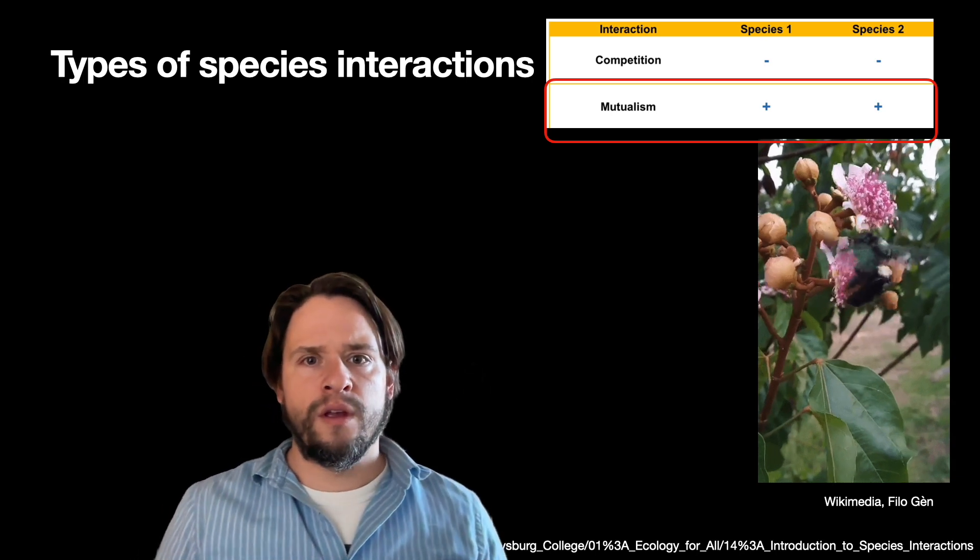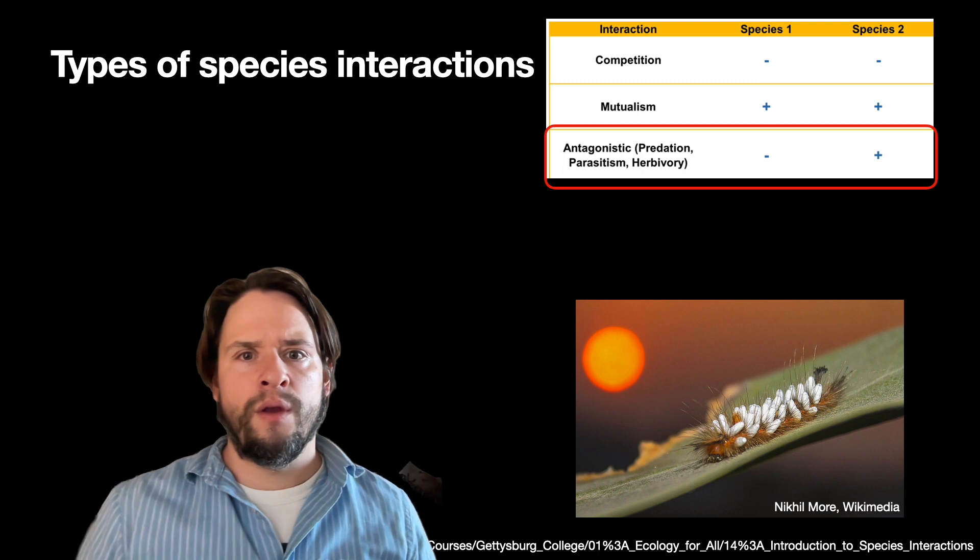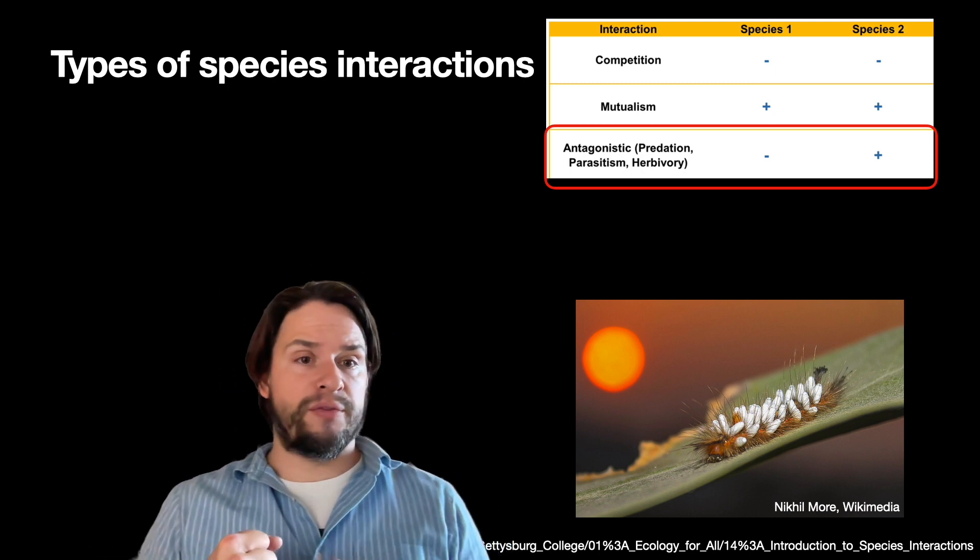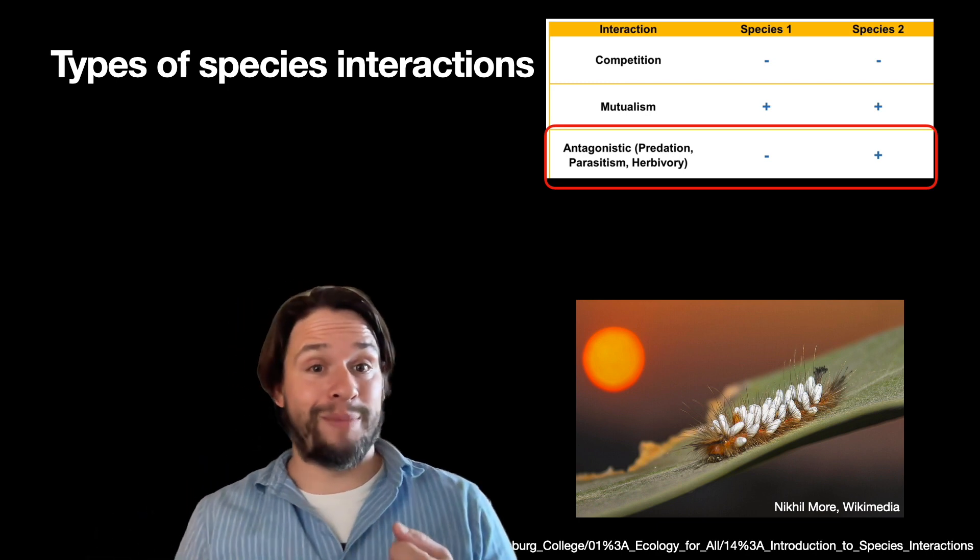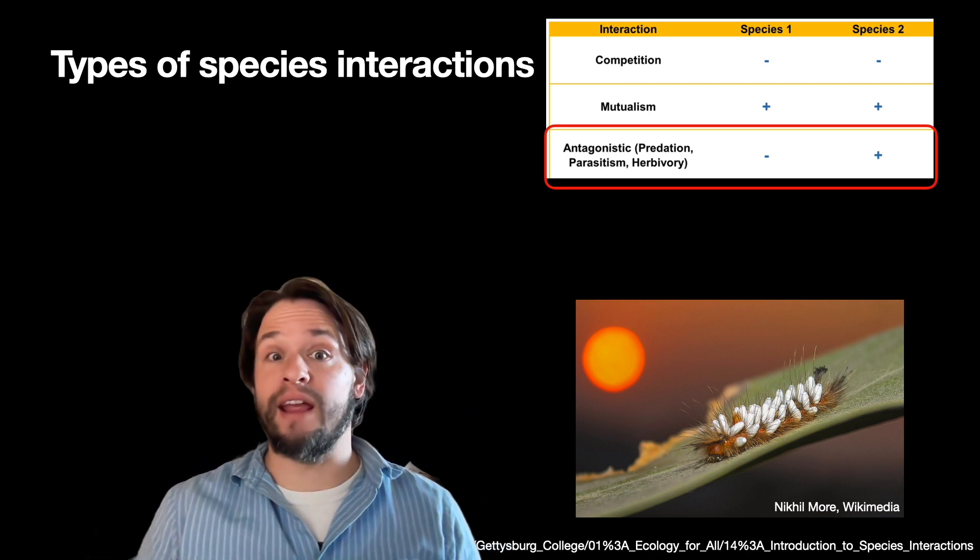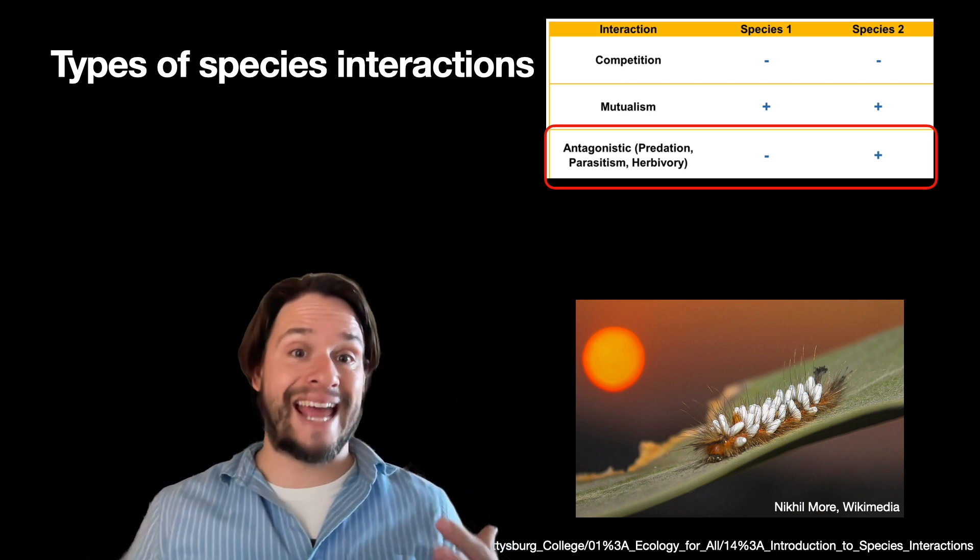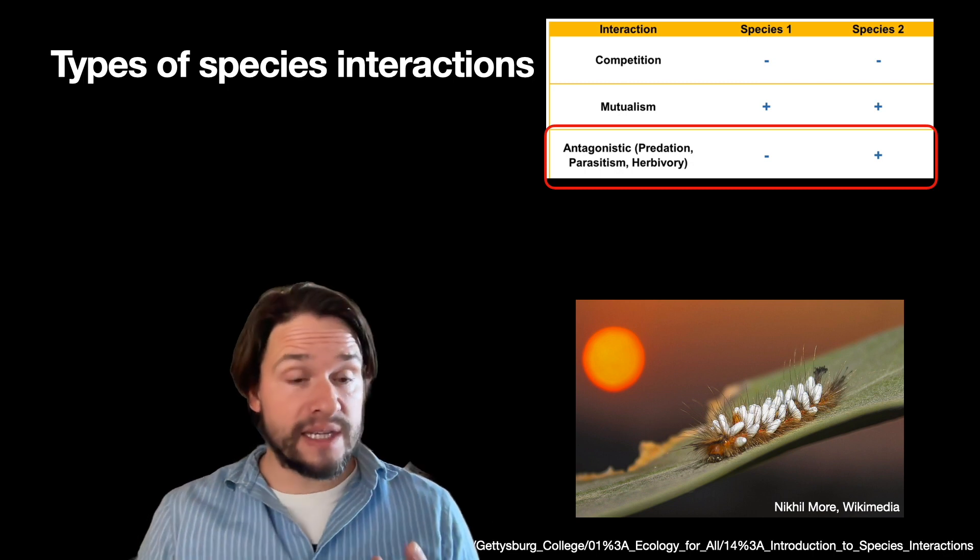But we can also think of interactions where one partner benefits but the other does not. And these generally we can consider them antagonistic interactions, and we've already seen many examples of this.